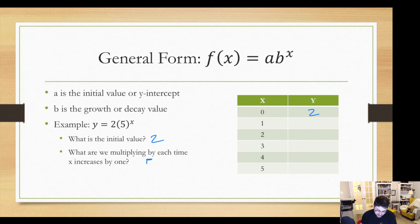So if I have, say, 2 times 5 to the x, well, our initial value is 2, which means that when x is 0, y is 2. What are we multiplying by each time? Well, as x goes up by 1, we multiply by 5. So 2 times 5 gives me 10. 10 times 5 gives me 50. Times 5 again, 250. Times 5 again, 1,250. Times 5 again, 6,250. That's what's going on with these things.